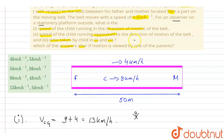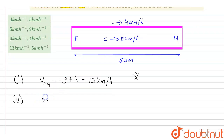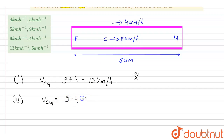Part two is the speed of the child running opposite to the direction of motion of the belt. In this case, the velocity of the child with respect to ground, if the child is running opposite to the motion of the belt, will be 9 minus 4, so the velocity will be 5 km/h.